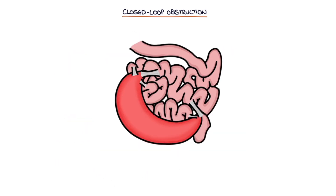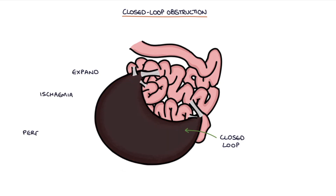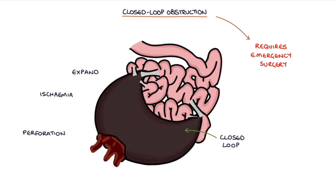The contents of a closed loop section of bowel do not have any open end where they can drain and decompress. Therefore, the closed loop section will inevitably continue to expand, leading to ischemia and perforation. Closed loop obstruction requires emergency surgery.